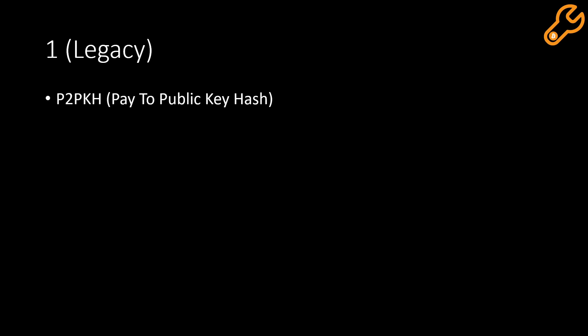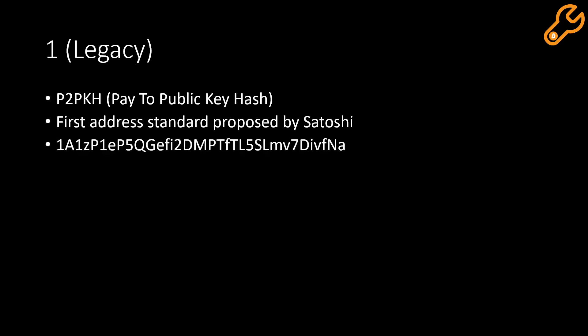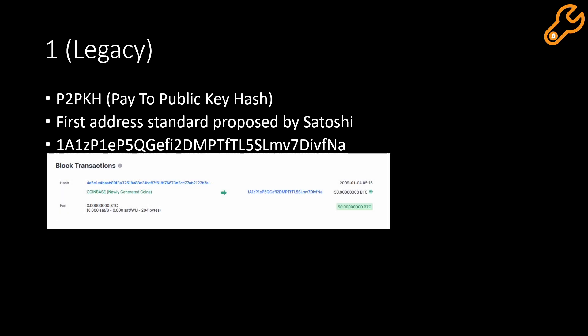The first and oldest address, known as the legacy address, starts with one and can sometimes be known as the P2PKH or pay-to-public-key-hash. It is the first address standard proposed by Satoshi, and looks a little something like this — starts with a one then a whole lot of characters after that. If you recognize this address, you're a massive nerd, because this is Satoshi's address in the first ever mined block.